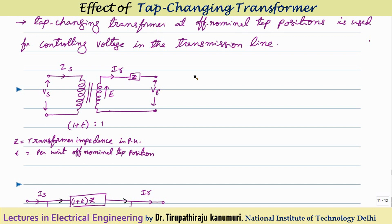To represent this in the form of an admittance matrix, there should be a series admittance between the two nodes — the sending end and the receiving end — and shunt admittances at the sending end and receiving end between each node and the neutral point. Let us represent these terminals as P and Q. Between P and neutral, between Q and neutral, and between the two nodes, there should be some admittance. So I am writing the equations to get this form.